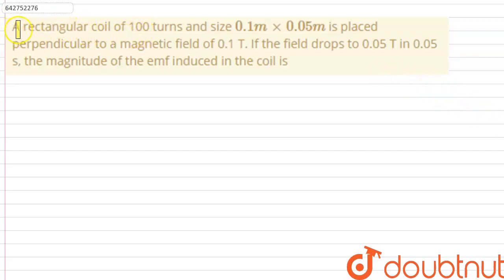A rectangular coil of 100 turns and size 0.1 meter into 0.05 meters is placed perpendicular to a magnetic field of 0.1 tesla. If the field drops to 0.05 tesla in 0.05 seconds, the magnitude of the EMF induced in the coil is.